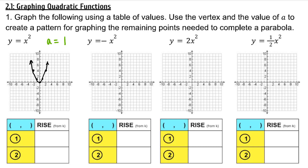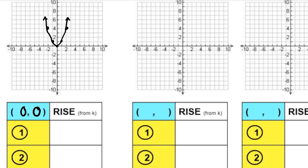In this example, our vertex is (0, 0), so let's focus on these four points around the vertex. When we move one unit horizontally away from the vertex — one unit to the right or one unit to the left — the y value goes up 1. When we move two units away from the vertex, the y value moves up four units.